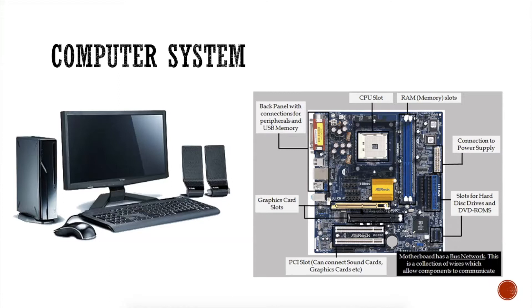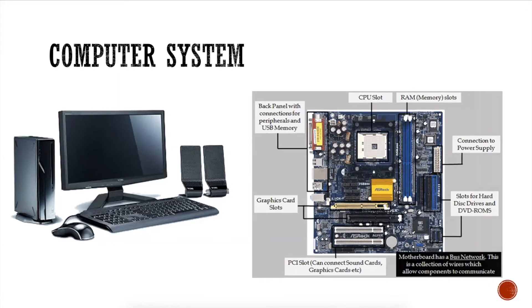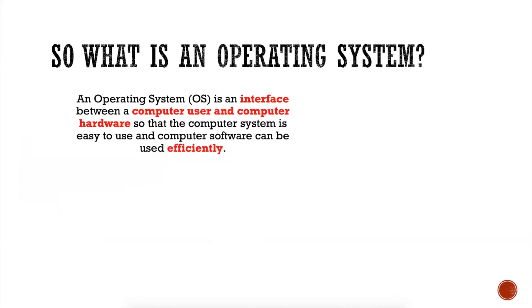The computer system refers to all the electronic equipment that works together inside your computer. So, what is an operating system? An operating system is an interface between a computer user and computer hardware, so that the computer system is easy to use and computer software can be used efficiently.